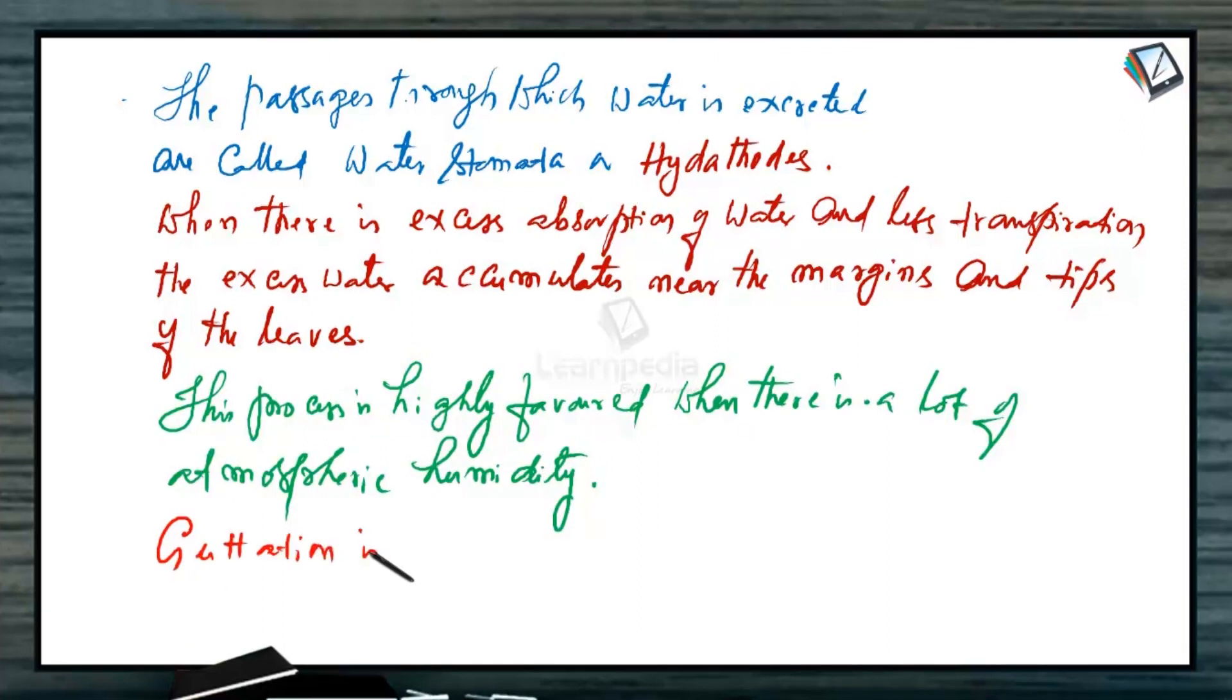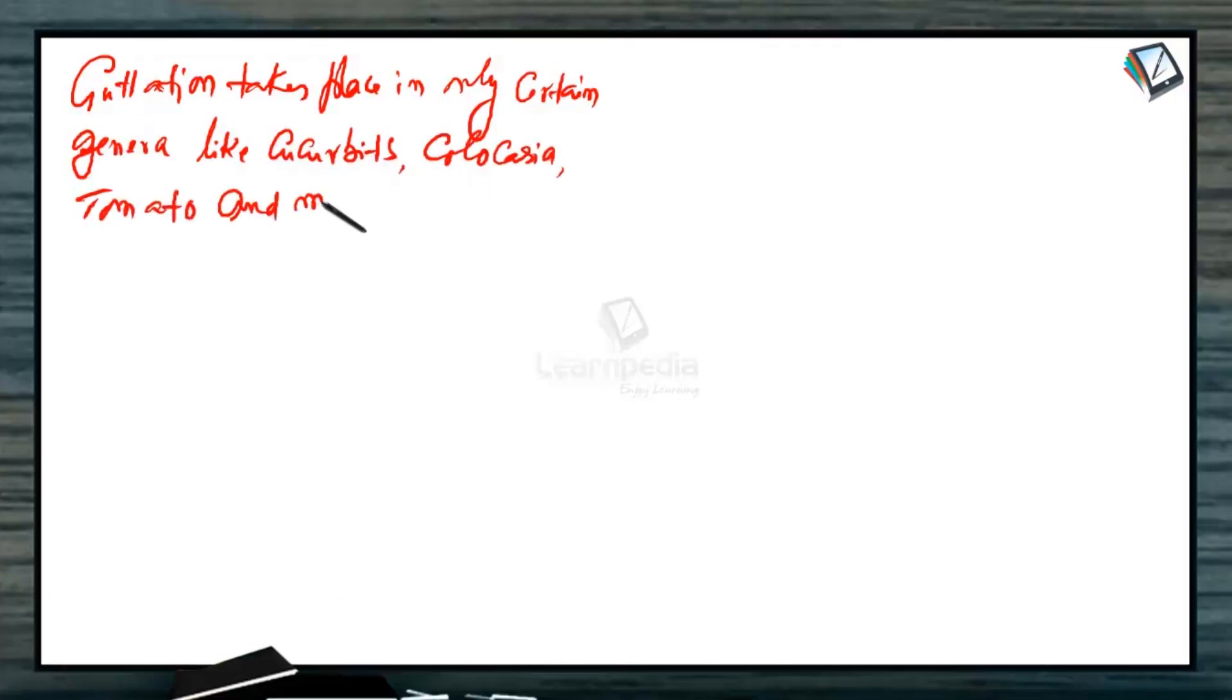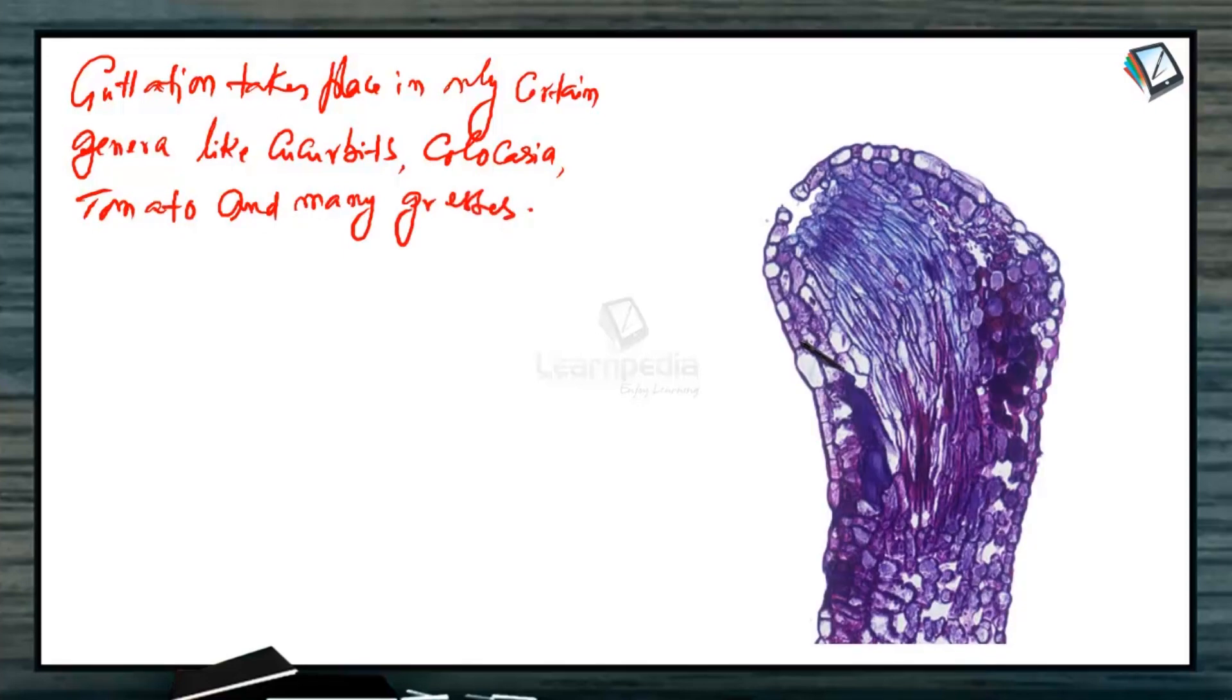Guttation is not a universal phenomenon. Guttation takes place in only certain genera like cucurbits, colocasia, tomato and many grasses. Look at this image.